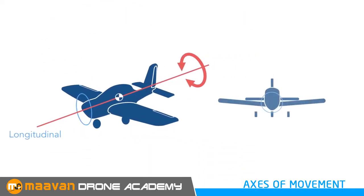The rotation about the longitudinal axis is called roll. This is the movement of the aircraft's wings. One wing goes up, the opposite wing goes down.